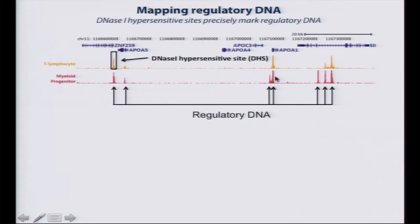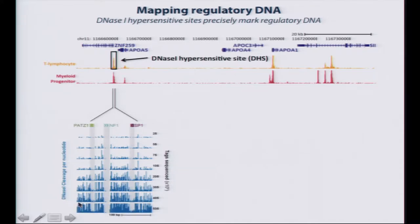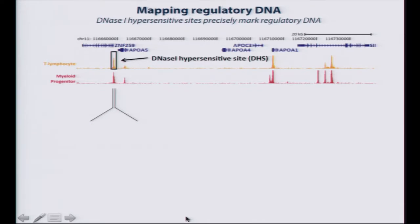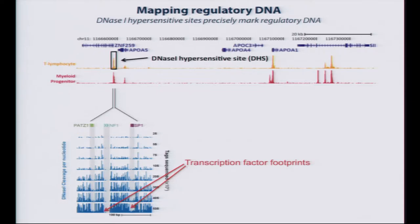Generically, I'm going to refer to all of these peaks as the regulatory DNA compartment. Inside these peaks, if you sequence more and more deeply, you can actually start to see the structure of where these proteins are. This is illustrated by depth of sequencing: this is where the proteins recognize the DNA, and you can see the appearance of the transcription factor footprints where they're sitting on the genome.